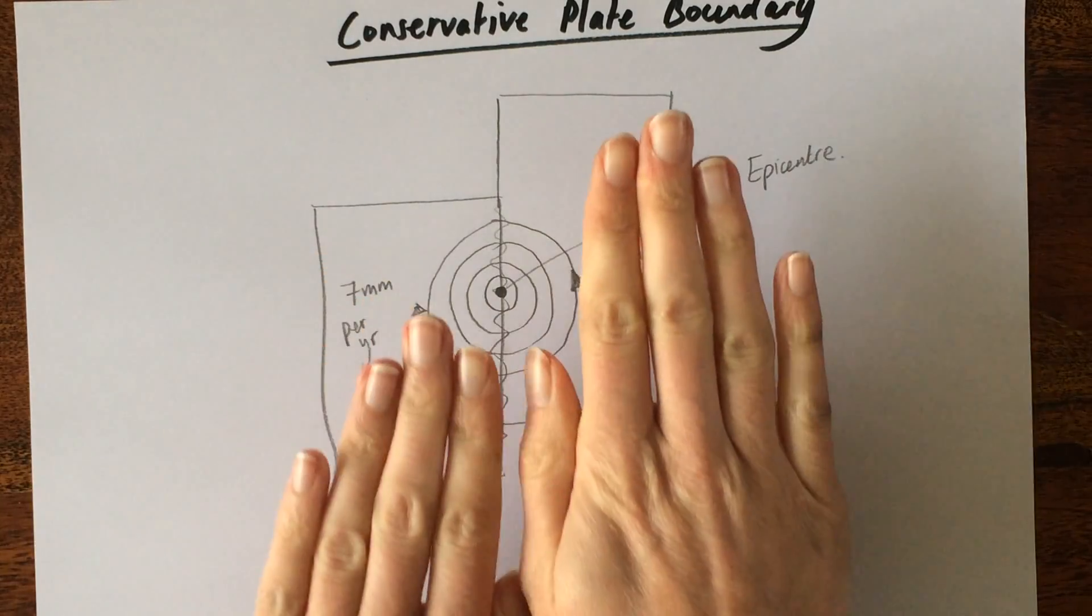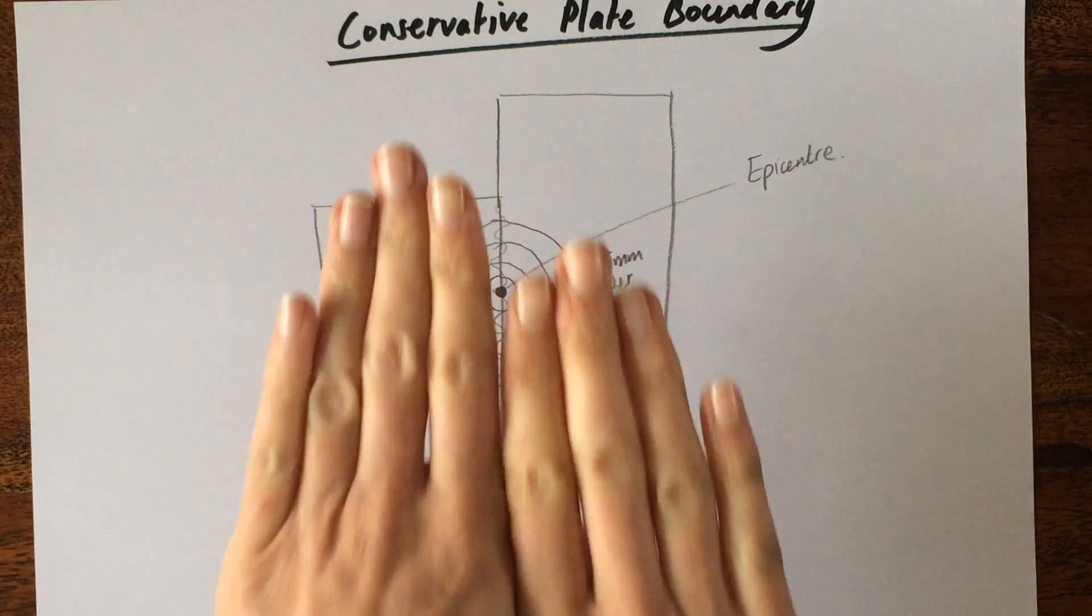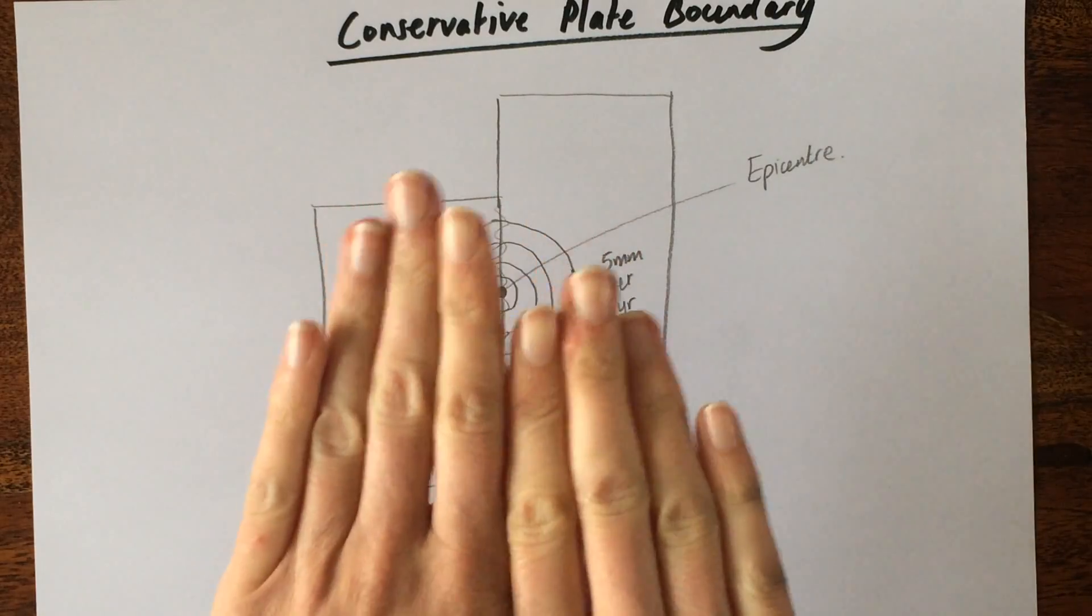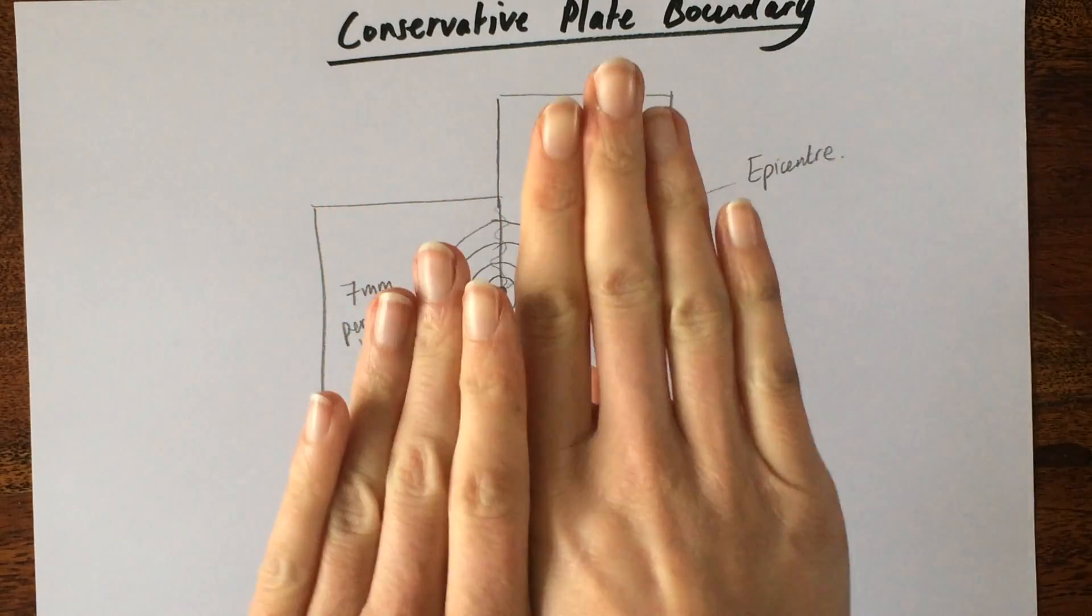That's simply because these plates will be getting stuck and jammed as they're trying to move alongside, and the pressure will build up and up until eventually they break free. That point of break is the focus. If it's shallow, if it's a shallow focus, the shaking will be very violent. If it's a deeper focus, the shaking won't be quite so bad.